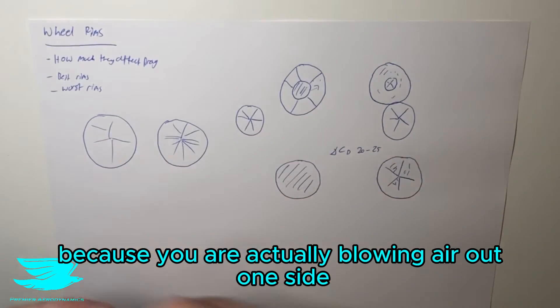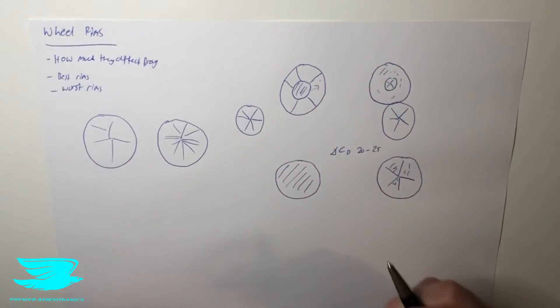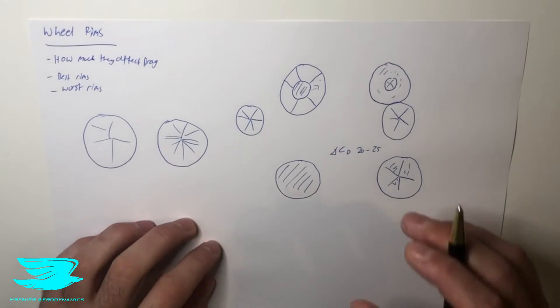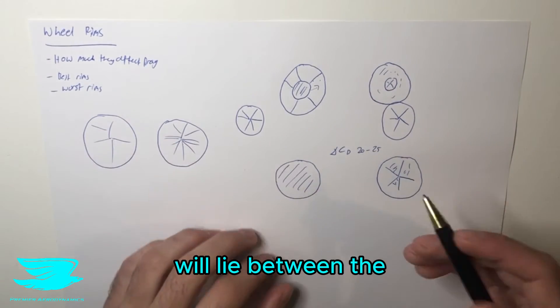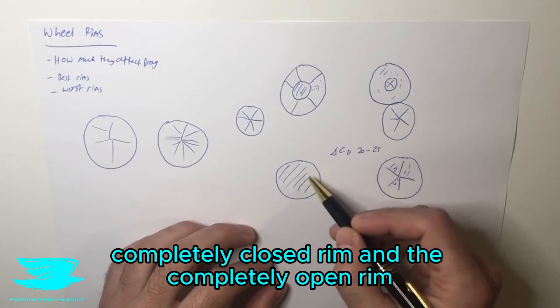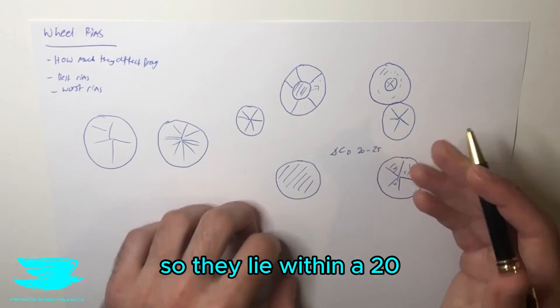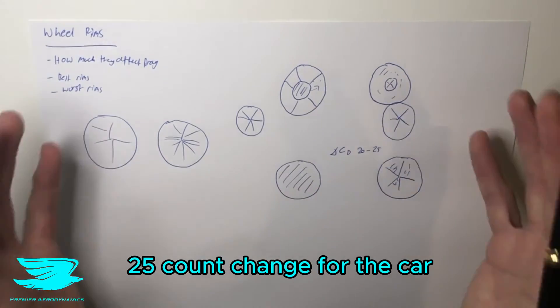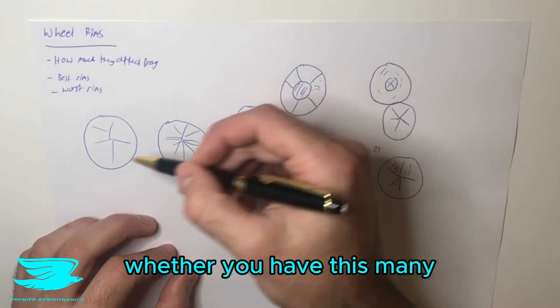That's actually very bad, because you're actually blowing air out one side and pulling air on the other side of the car. That's quite bad for drag. But all these rim designs will lie between the completely closed rim and the completely open rim, within a 20-25 count change for the car.